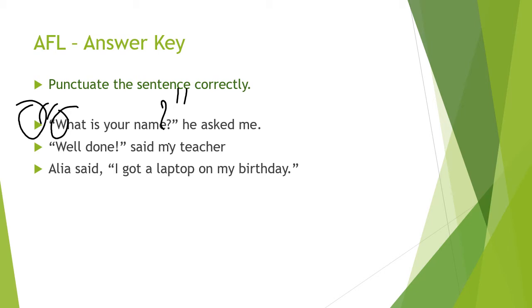Second one: 'Well done!' — it is an exclamatory sentence, so place the inverted comma and before closing the inverted commas put an exclamation mark: 'Well done!' said my teacher. Third one: Alia said — comma — you have to place a comma before you start the direct speech. Then place the inverted commas, write 'I got a laptop on my birthday.', put a full stop, and then close the sentence with the speech mark — that is the inverted commas for direct speech.